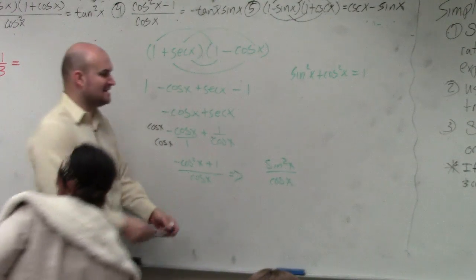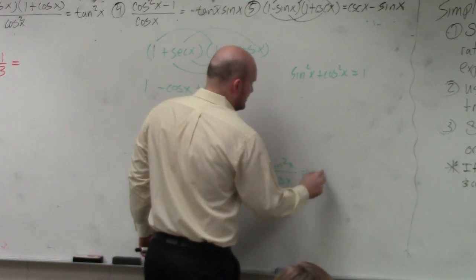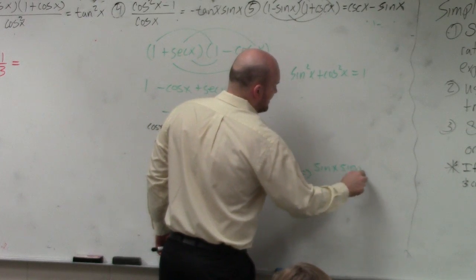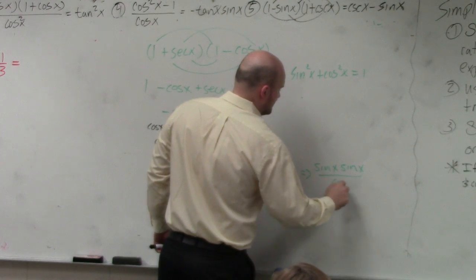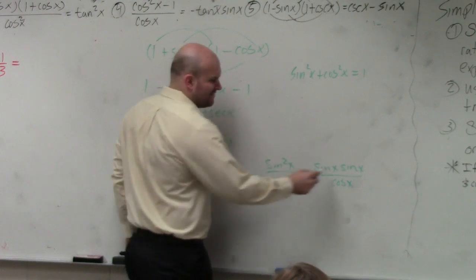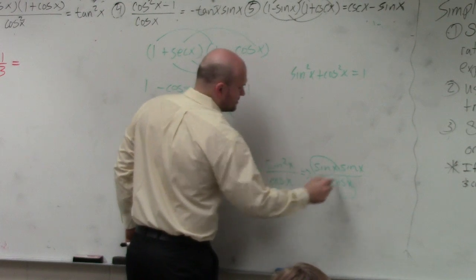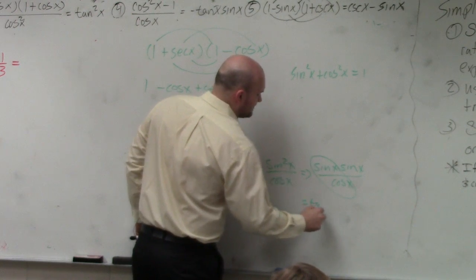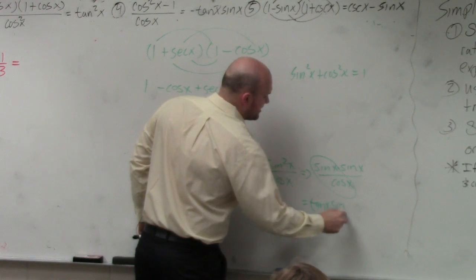Well, what I'm saying is I could now break this apart into sine of x times sine of x all over cosine of x. I believe I remember one of them was tangent. So you'd have tangent of x times sine of x.